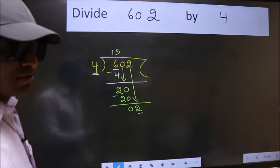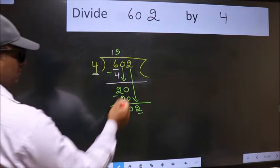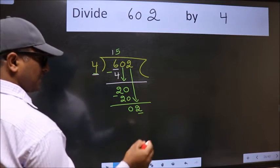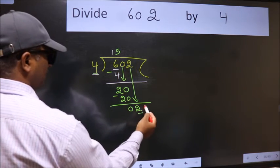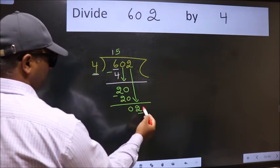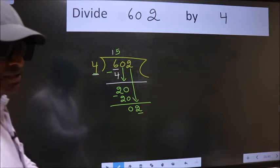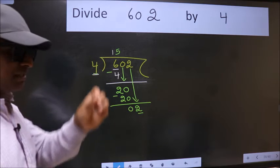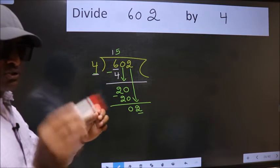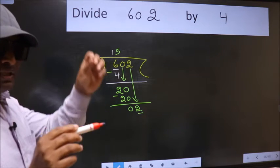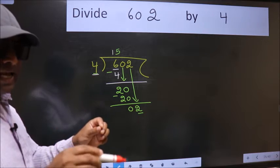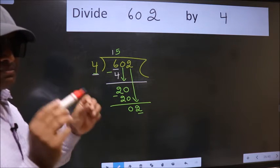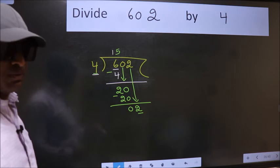Why is it wrong? Because just now you brought this number down. And in the same step, you want to put dot, take 0, which is wrong. I repeat. Bring down the number and put dot, take 0 in the same step, you should not do.